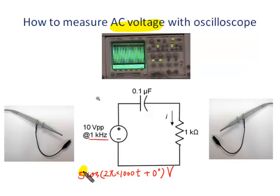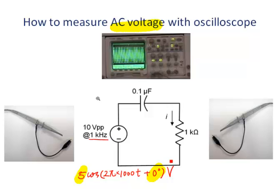To measure the AC voltage, we need to measure both the magnitude and also the phase angle. For such a simple circuit, let's assume that we are interested in the voltage across the resistor, VR. So we want to measure both the voltage magnitude and phase angle for VR.